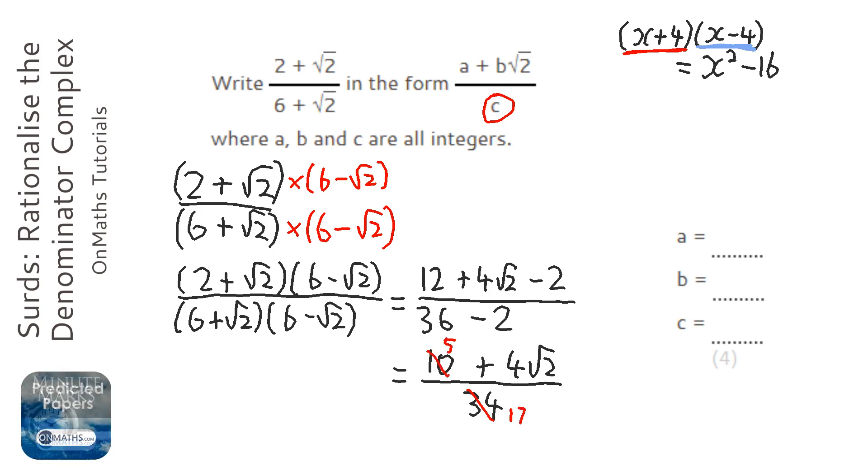So for our answer, a will be 5 or 10 if I didn't divide everything by 2, b will be 2 or 4 if I didn't divide everything by 2, and c will be 17 or 34 if I didn't divide everything by 2.